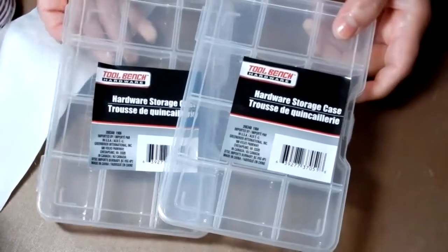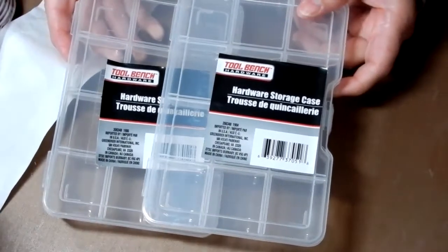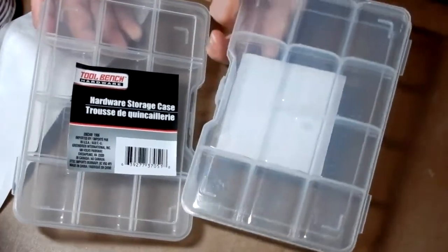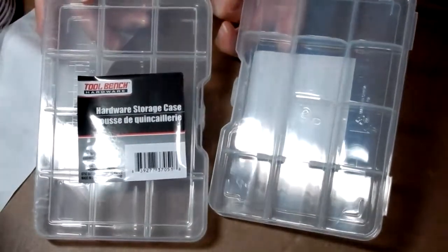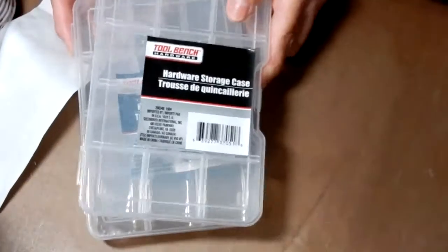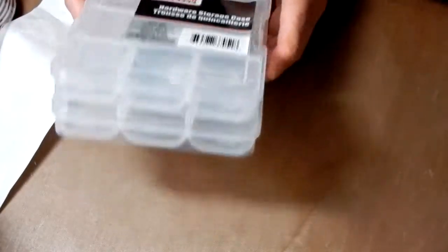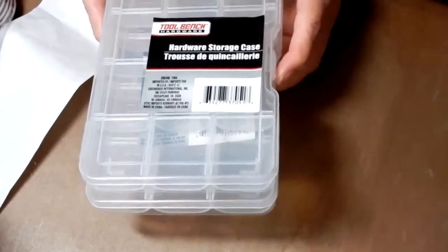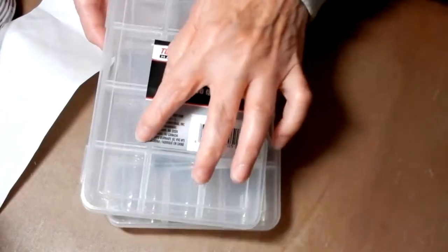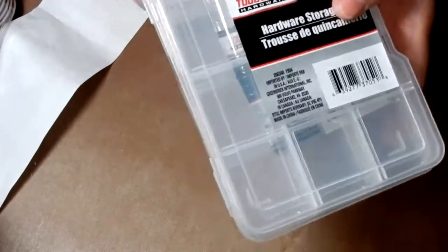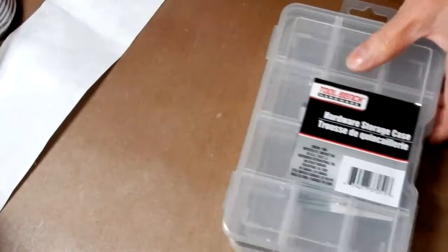And then I found these tool caddies, and they're actually pretty good. And you pay a lot more for stuff like this in Joann's. So I thought this would be good for maybe some project kitting. And there's even a little ruler kind of there on the edge, which is pretty cool.